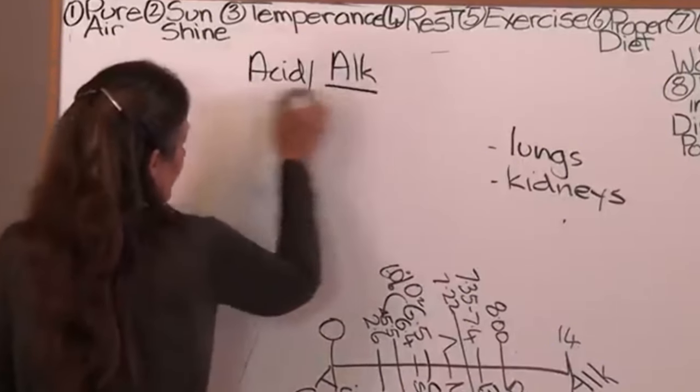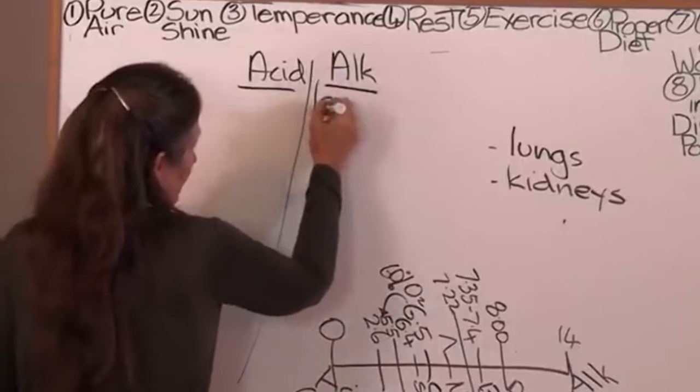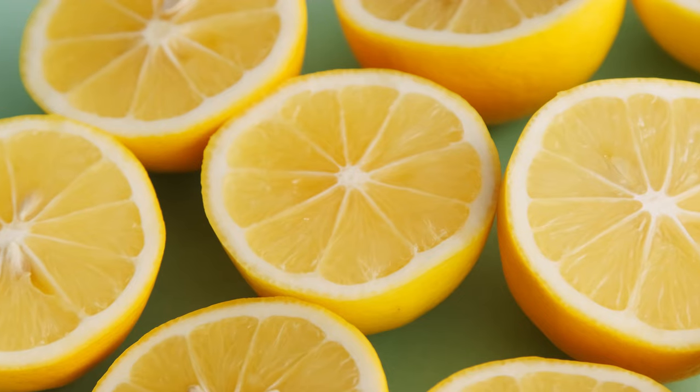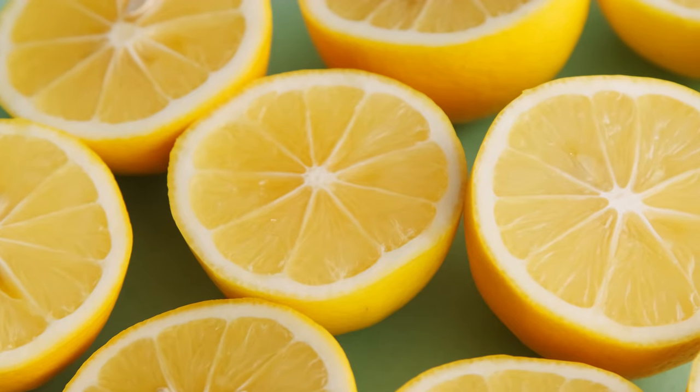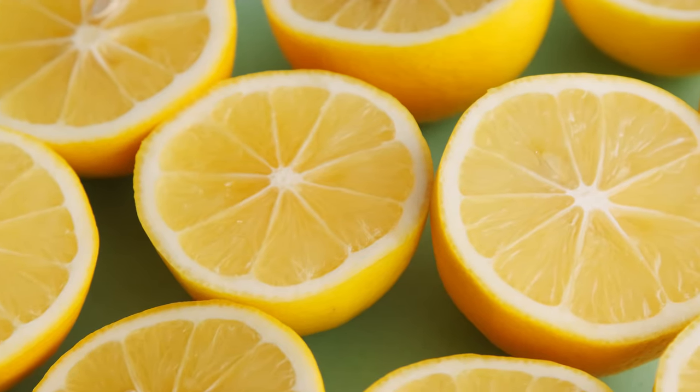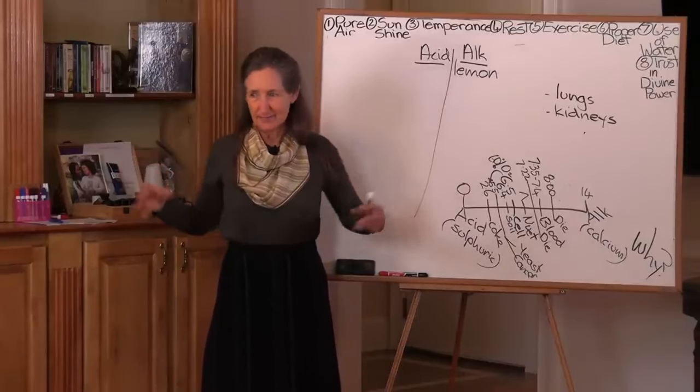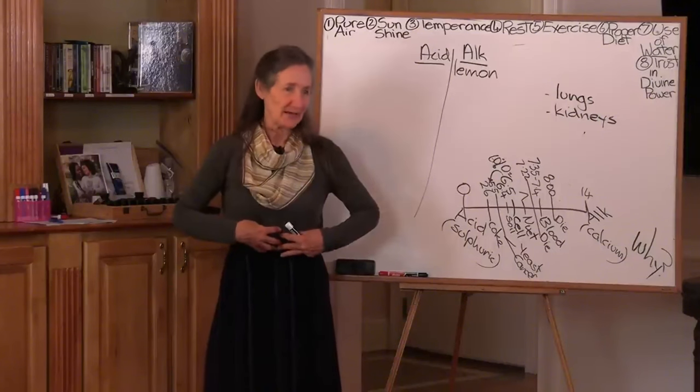And you might be surprised to see that the first alkaline food I'm putting up here is the humble lemon, and you might say no, the lemon's acid. It is, and it's acid where it should be. There's only one part in the body that should be acid. Do you know where that is? Stomach. It must be acid.